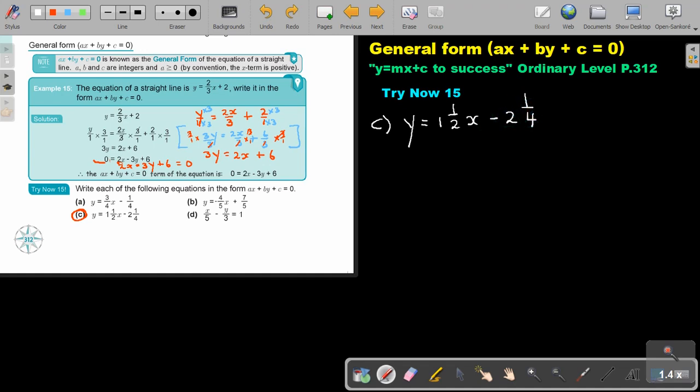So if I have y equals 1 and a half x minus 2 and a quarter. Now, the first thing I have to do, I have to just make everything fractions. So put it over 1, make it improper. So 1 multiplied 2 plus 1, it's 3 over 2. But remember that x is over 1, and there's a multiply. So it's actually 3x over 2. So it's on top. The same, it's 8 plus 1, so it's 9 over 4.